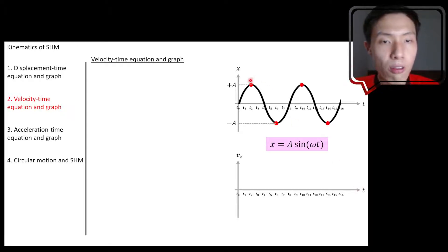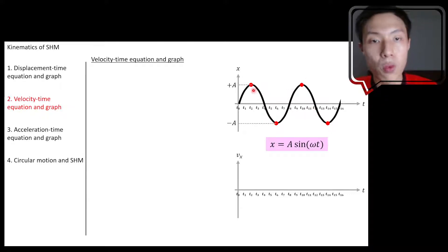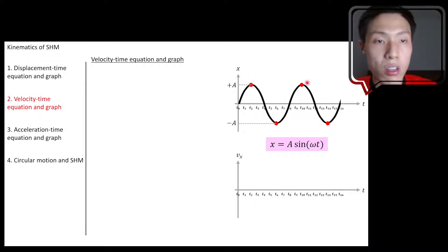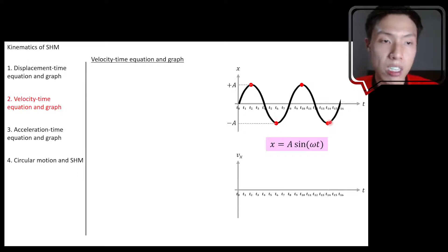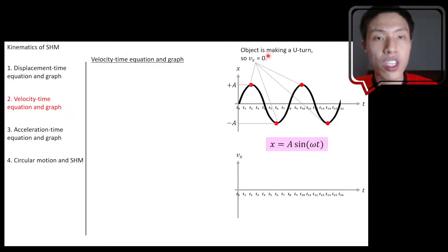I've picked four different moments here. These four dots represent the moments in which the object is at its maximum displacement — either the positive maximum displacement or the negative maximum displacement. These are the moments in which the object is making a U-turn.